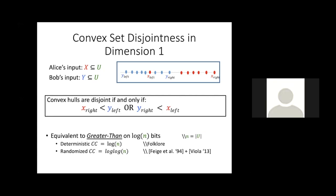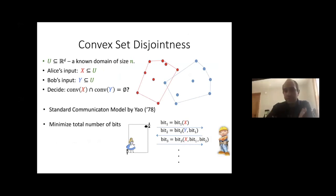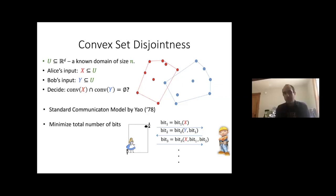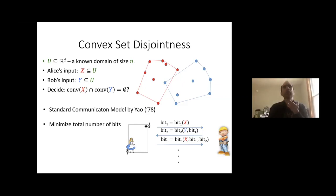A question arose about how the input is represented. We assume the domain U is a fixed known subset of R^d. Since U has size n, you can represent each point in U using log n bits, or you can represent a subset of U using an n-bit indicator vector.